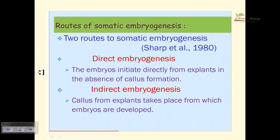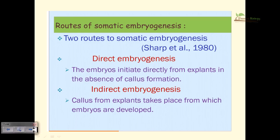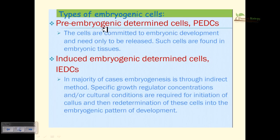There are two routes of somatic embryogenesis. Direct embryogenesis means the embryo initiates directly from explants without any callus formation. Indirect embryogenesis means callus is first produced from the explant, and then the embryo is formed from the callus. So in indirect embryogenesis there are three stages: explant → callus → embryo, whereas in direct embryogenesis it is explant → embryo directly.